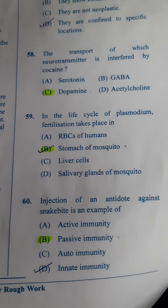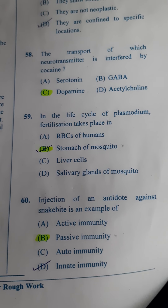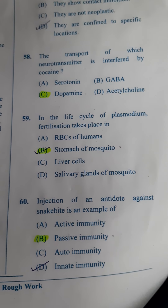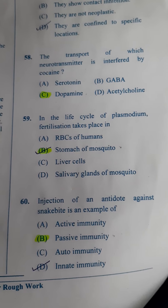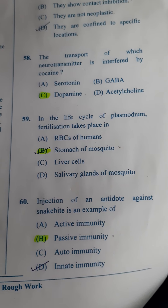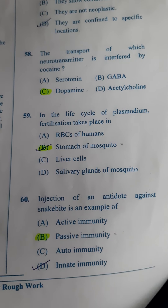Next: In the life cycle of Plasmodium, fertilization takes place — in the whole life cycle, fertilization of the gametes takes place in the stomach of the mosquito. So the answer is B.